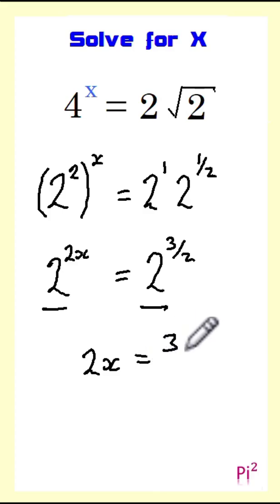Therefore 2x must equal 3 over 2. And if we halve both sides, we get that x equals 3 over 4.